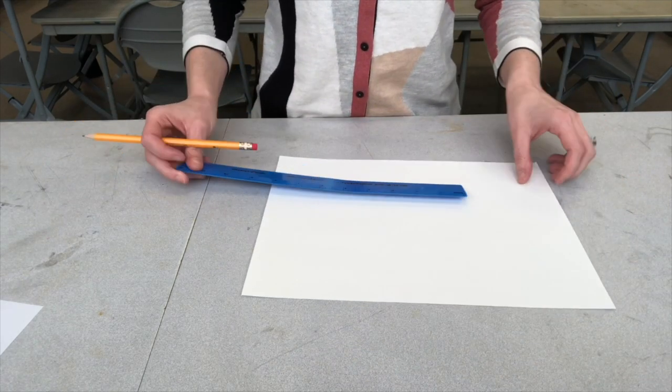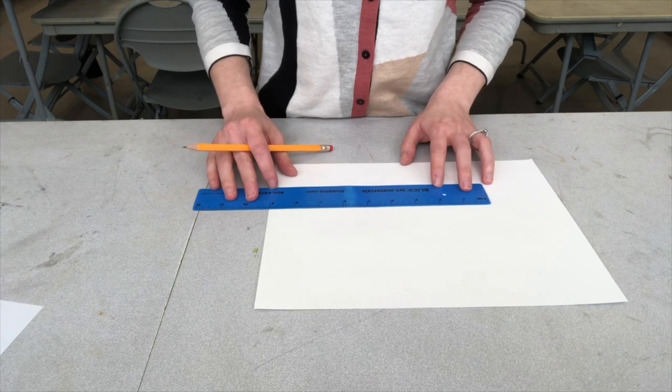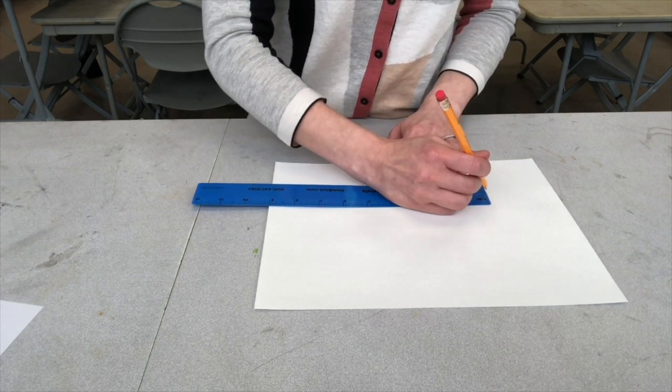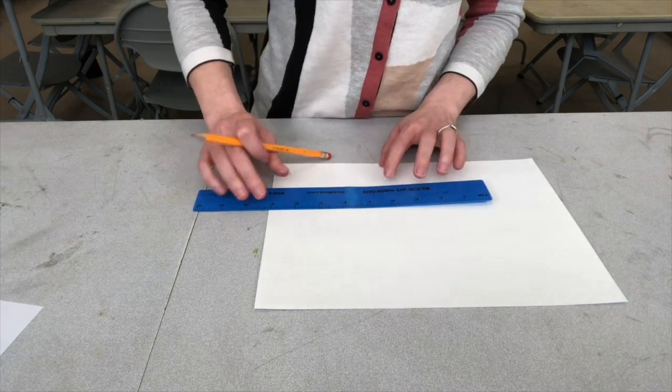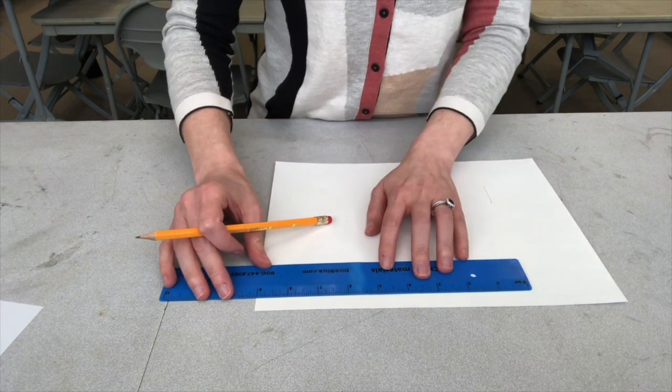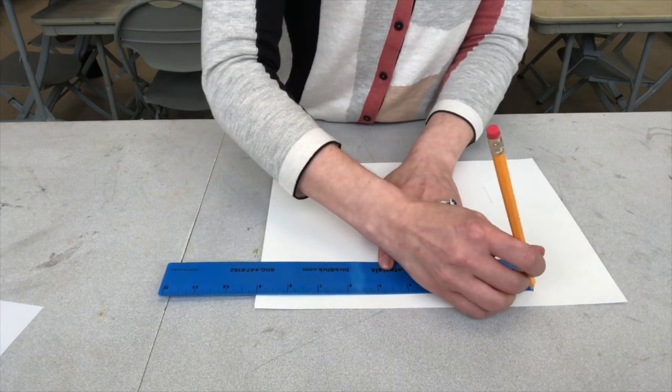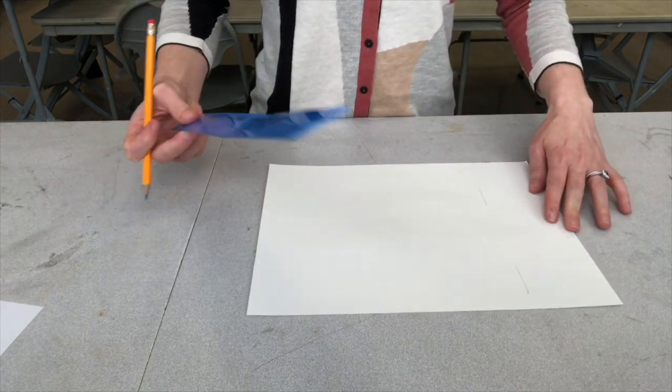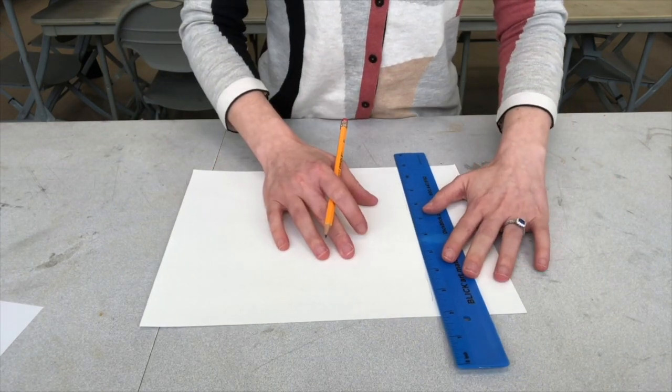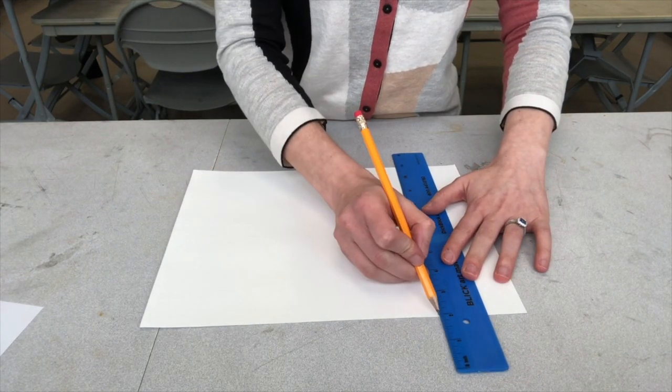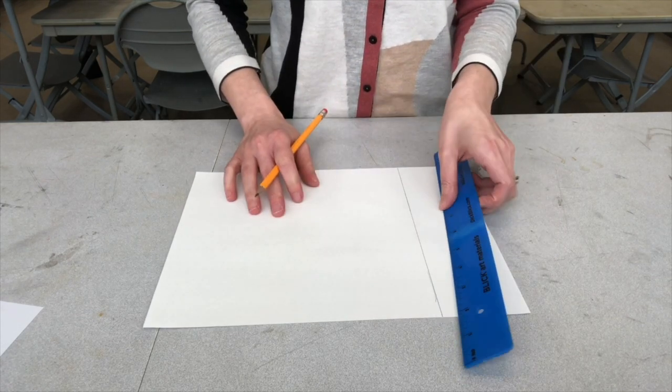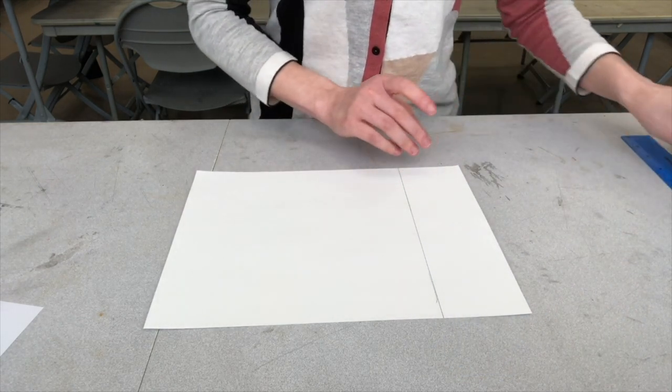So I'm going to measure nine inches out from the edge of the paper. And with my pencil, I'm going to mark that spot on the paper. I'm going to go across and mark the spot again. And with the ruler, I will now connect the two lines to see where I want to cut my paper.